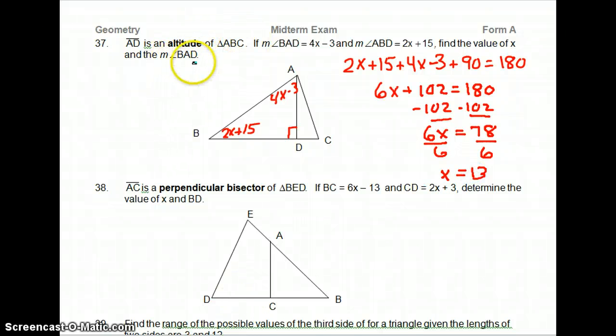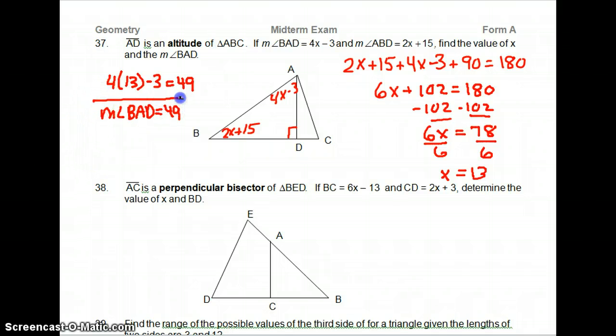X equals 13. And we also have to find measure BAD. BAD is up here. So 4 times 13 minus 3 equals 49. So the measure of angle BAD equals 49.